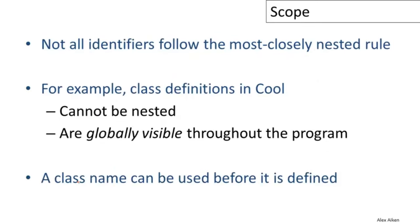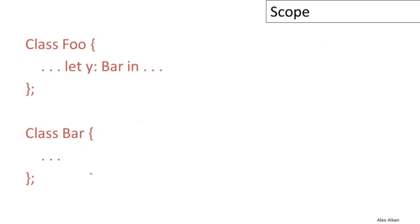Not all identifiers follow the most-closely-nested rule. A major exception in Cool is class definitions, which cannot be nested and are globally visible throughout the program. A class name defined anywhere is available everywhere, and importantly a class name can be used before it is defined. For example, in class Foo you can declare Y to be of type Bar, and only later declare class Bar — this is perfectly legal Cool code.